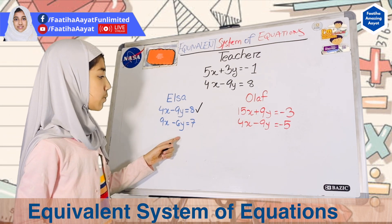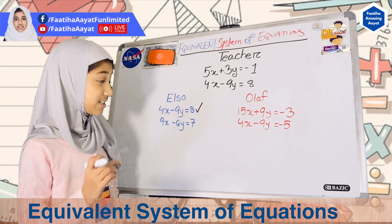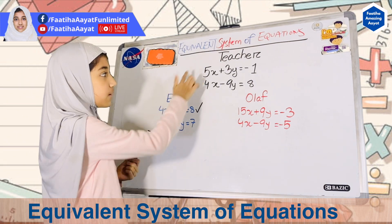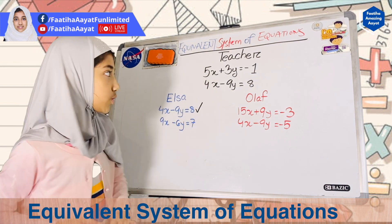9x minus 6y equals 7. She didn't give that, but it's still equivalent. Why? Because if you actually add both of these equations, then you'll find that it's equivalent to this. Let me show you how.